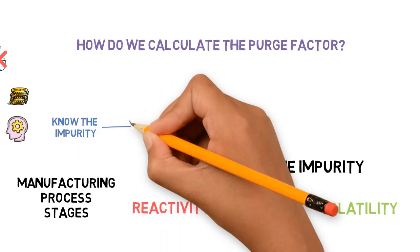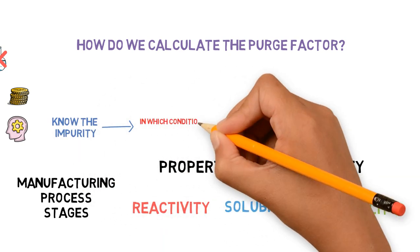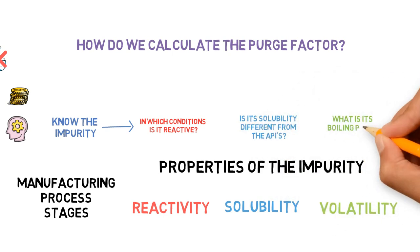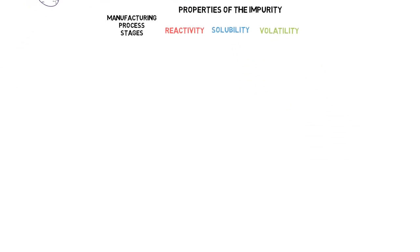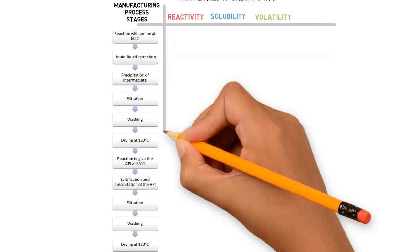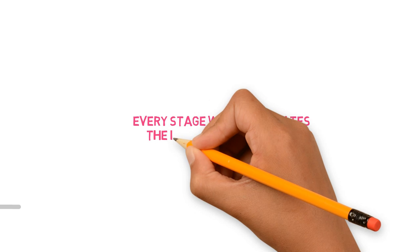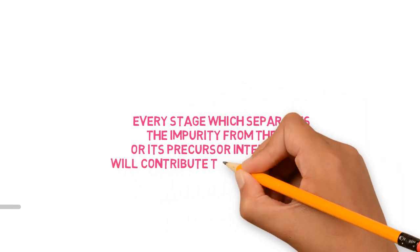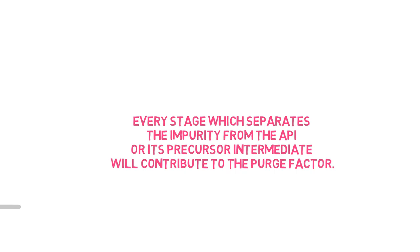So first, we need to know our impurity. In which conditions is it reactive? Is its solubility different from the API's? What is its boiling point? And second, we need to know our manufacturing process. The conditions used in each stage must be considered because every stage which separates the impurity from the API or its precursor intermediate will contribute to the purge factor.